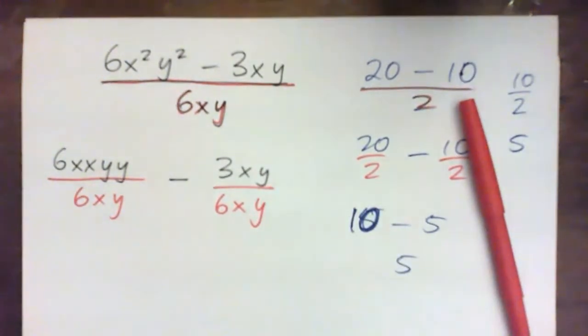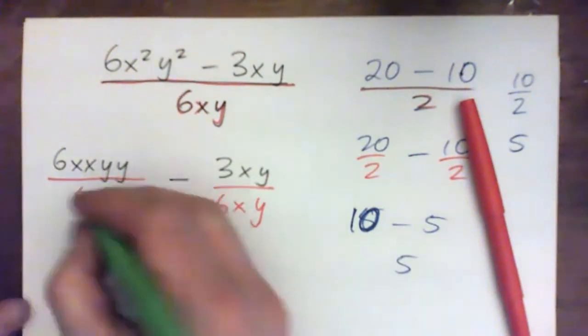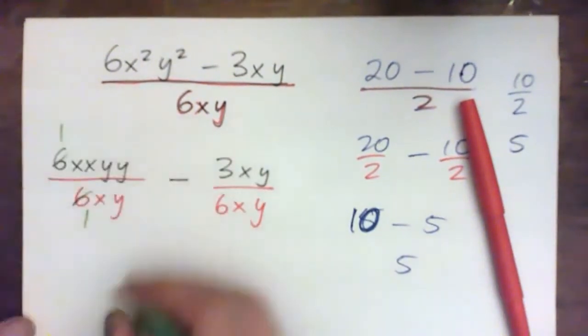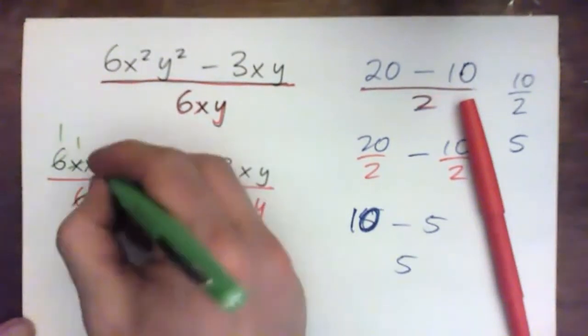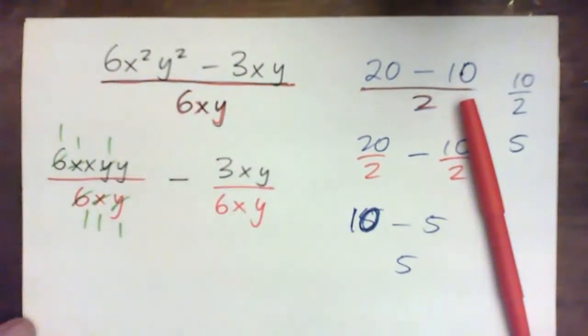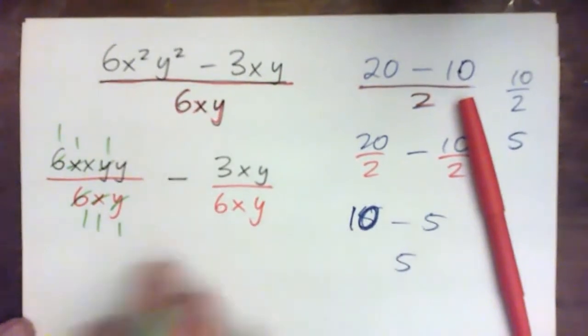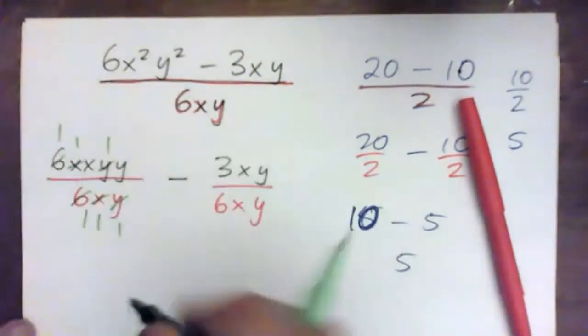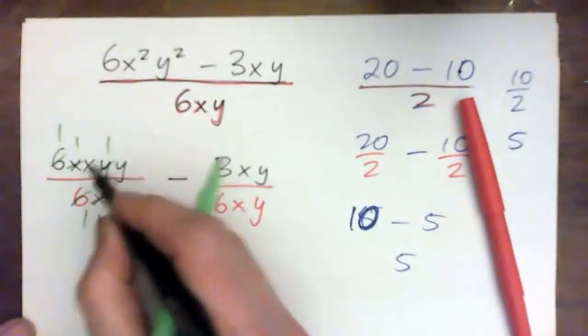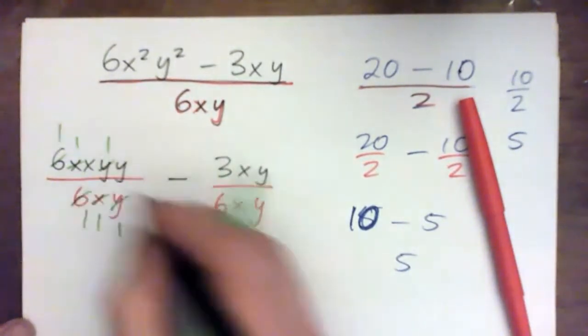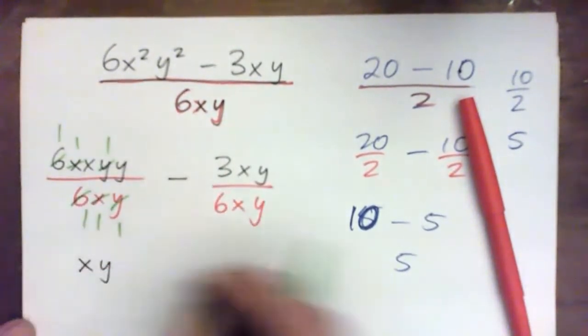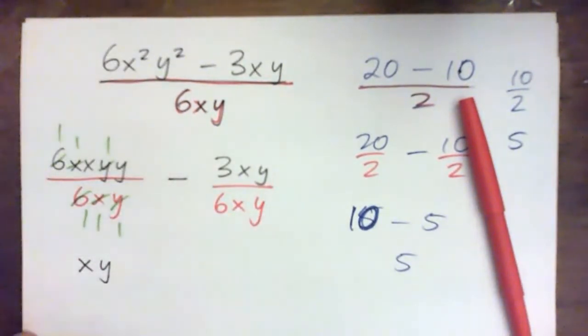So the 6s cross-cancel, this x cross-cancels here, this y cross-cancels. And by the way, I hope you all pressed pause on the video and tried it, because I'm just running through it now. So I get 1 times 1 times x times 1 times y, which is xy, all over 1. So xy.